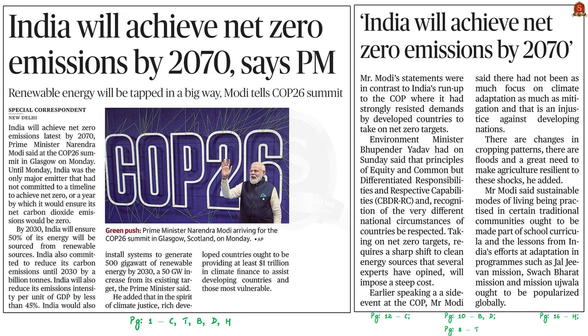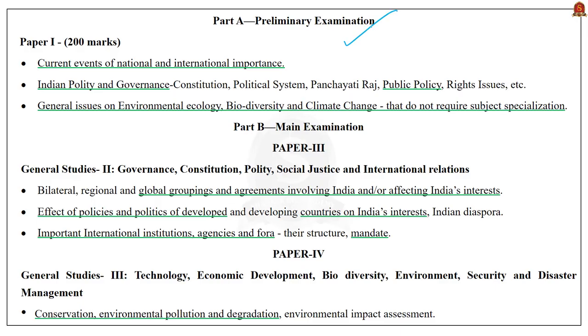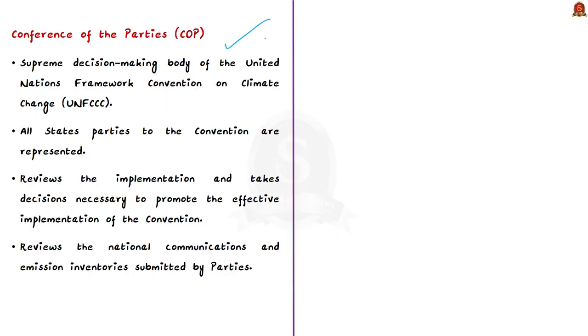The first discussion is based on the hot topic of the ongoing COP26 summit. This news article reports that the Indian Prime Minister has agreed to certain climate-related targets at COP26. Let us understand what COP is, and then see the targets agreed by India, as many more news articles on this summit are expected. COP stands for Conference of the Parties — it is the supreme decision-making body of the United Nations Framework Convention on Climate Change.